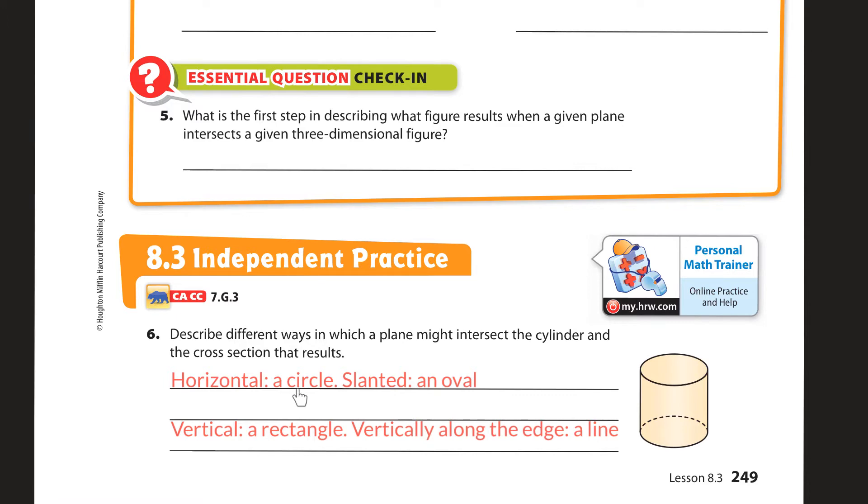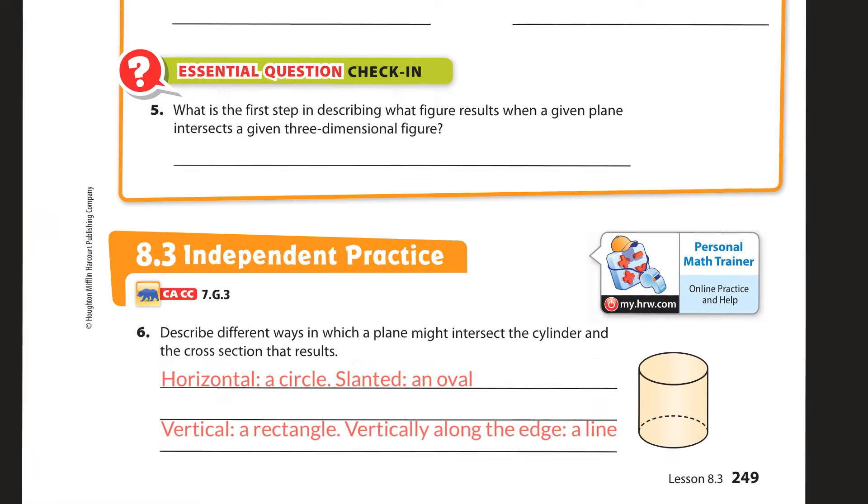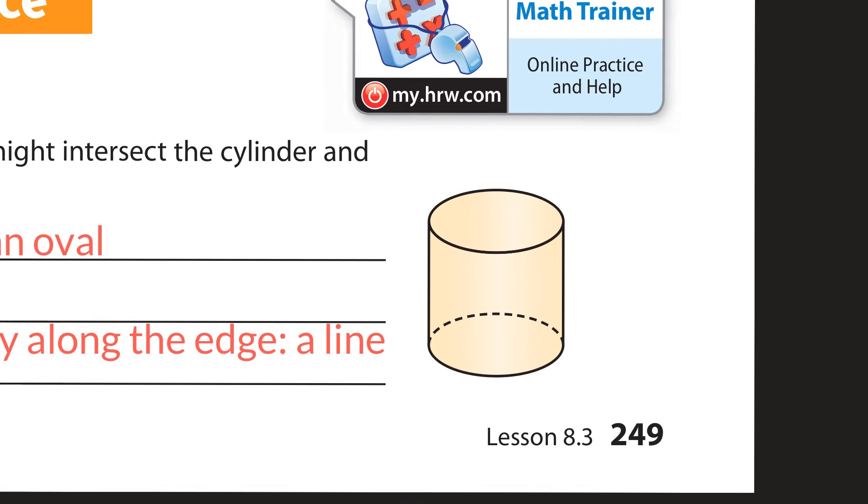So I'm going to go through each of them. There's four of them. There's horizontal, and you can make a circle. I'm going to zoom in on this. So horizontal means it's going to be straight through like that. And what we would get is if it cuts straight through, it would be a circle. It would be just like this right here, parallel to the base.